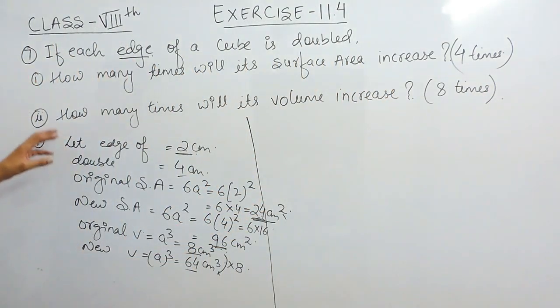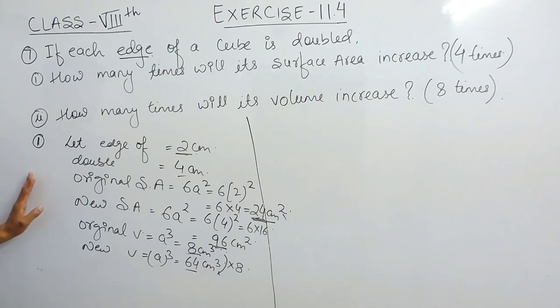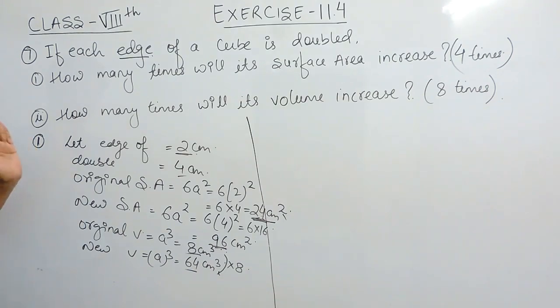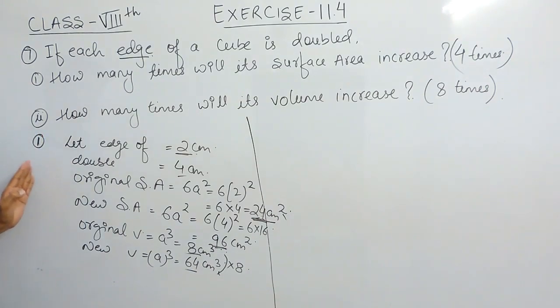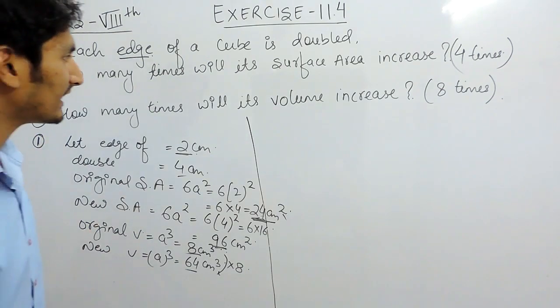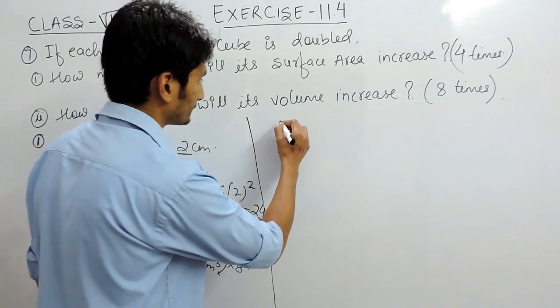So this is the first way of solving this question. It is better to assume any number rather than a variable like x, y, or z. Now let's look at the second method.